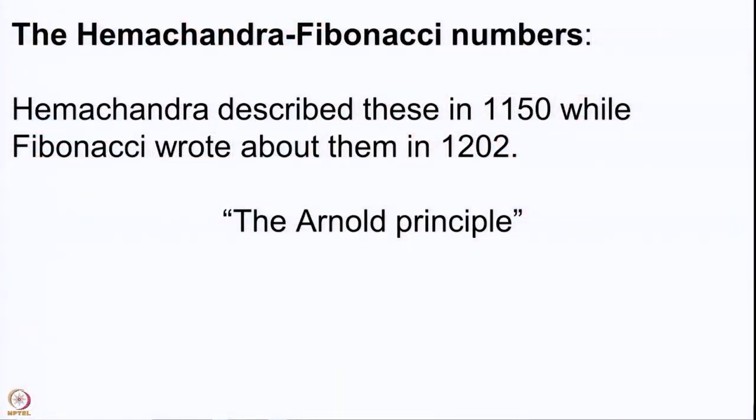It is okay if these numbers are described as Fibonacci numbers, but once you know they were also described by Hemachandra much before Fibonacci, we should call them Hemachandra–Fibonacci numbers. In passing, I would like to mention the Arnold principle, which states that any mathematical term named after a mathematician is not discovered by the corresponding mathematician. That applies to the Fibonacci numbers because they are named after Fibonacci but discovered by Hemachandra much before him. This happens quite regularly in mathematics — names are given by people who make concepts popular or write first about them.